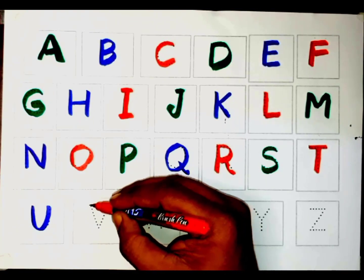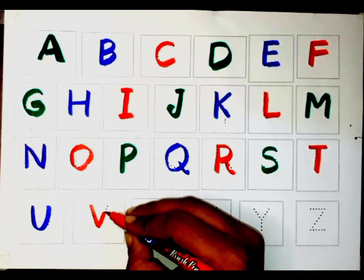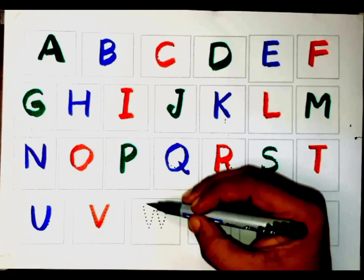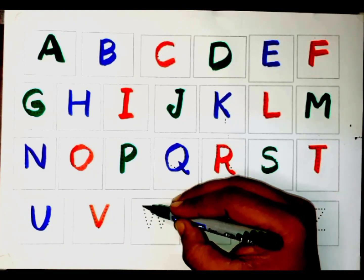Red color. V. V. V for vegetable. V. V for vegetable. Green color.